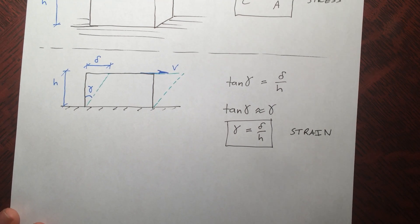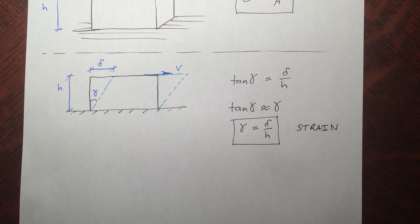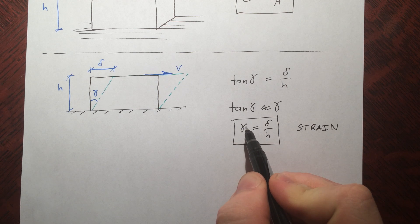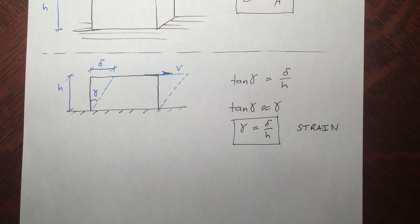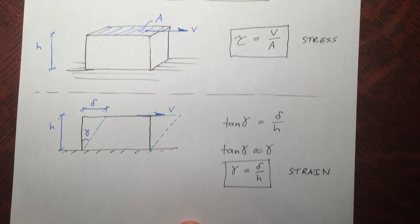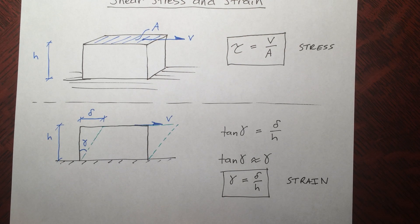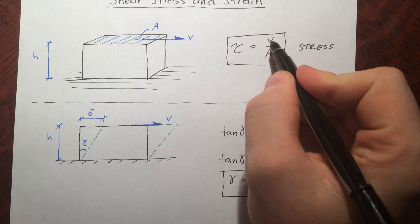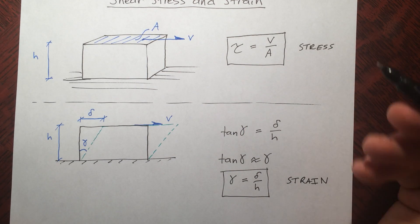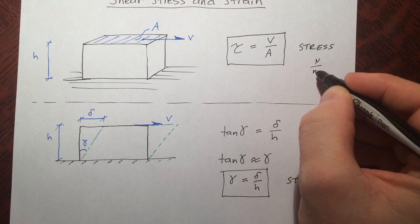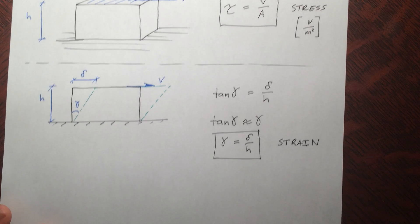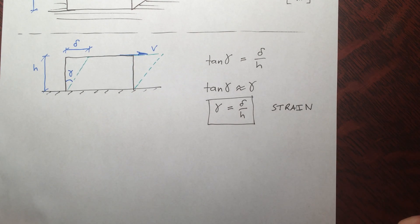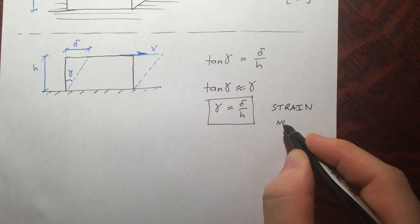This here is our shear strain. It's kind of the same as a normal strain in that it doesn't have any units, but this one you can kind of think of it physically because it's actually an angle. Now the units of stress and strain are exactly the same as they were before. We have a force over area, Newtons per meters squared, and here for strain we have distance over distance, no units.